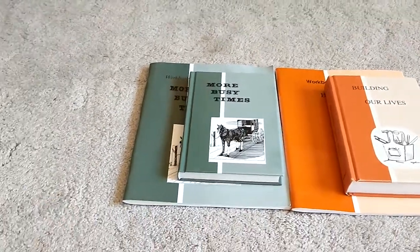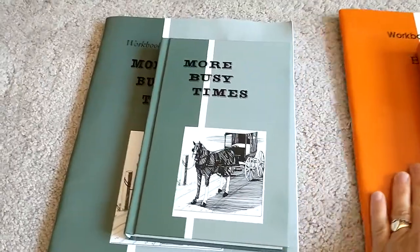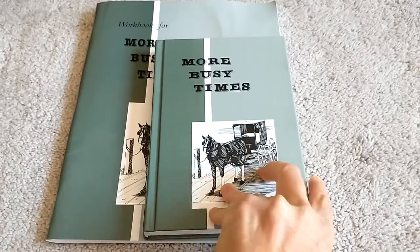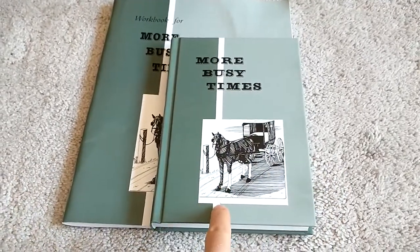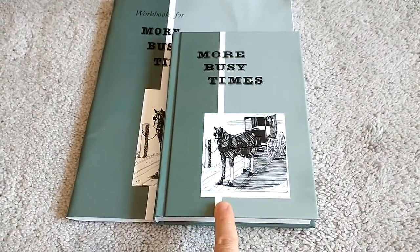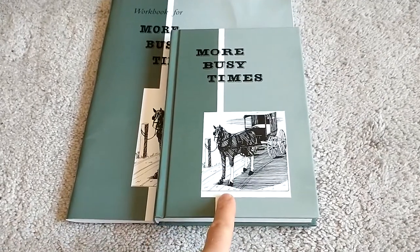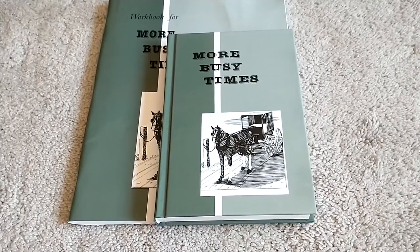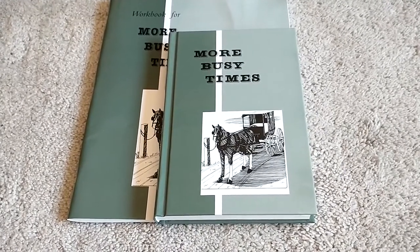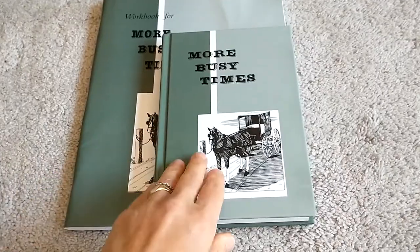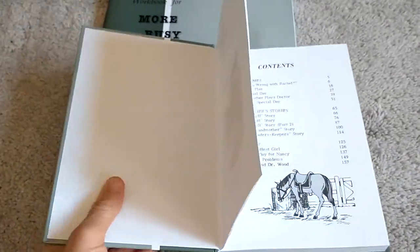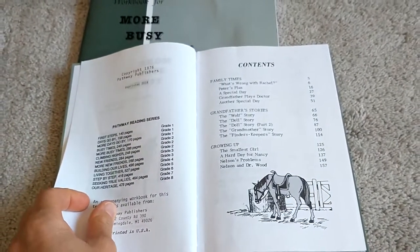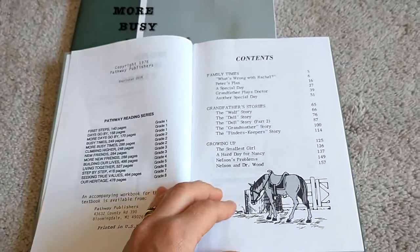Let's dive into the second grade More Busy Times so you can see what the reader looks like and what the workbook looks like. This is a Mennonite-based curriculum, so it is faith-based. They will be talking about God, so if that's something you're not interested in, this might not be the right curriculum for you. Since it is Mennonite-based, it's very wholesome stories and a lot of them are character-building stories, so I really appreciate that.